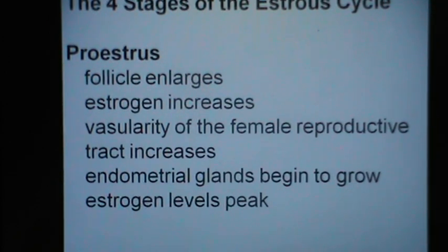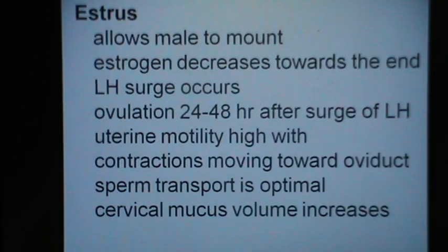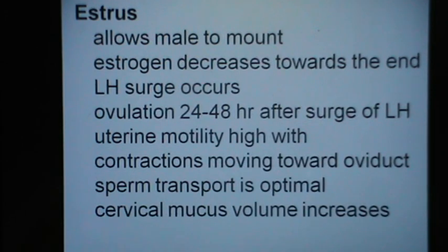During proestrus in cattle, the follicle enlarges, estrogen increases, the vascularity of the female reproductive tract increases, the endometrial glands begin to grow, and estrogen levels peak during this time. During estrus, the female animal allows the male to mount, the estrogen decreases towards the end, and an LH surge occurs. A peak LH surge results in ovulation 24 to 48 hours after the LH surge. Uterine motility is high during estrus with contractions and increased blood supply; sperm transport is optimal and cervical mucus volume increases.